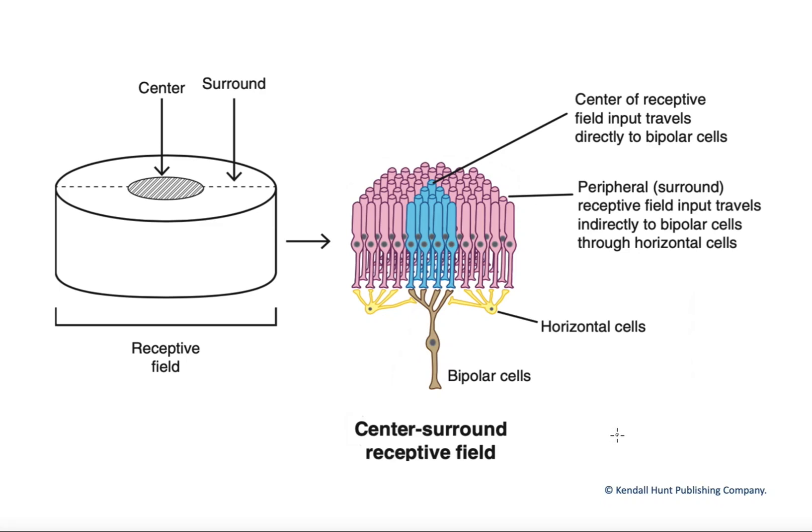In this figure, we want to talk a little bit about retinal processing of light information. We're going to talk about what are called center-surround receptive fields.